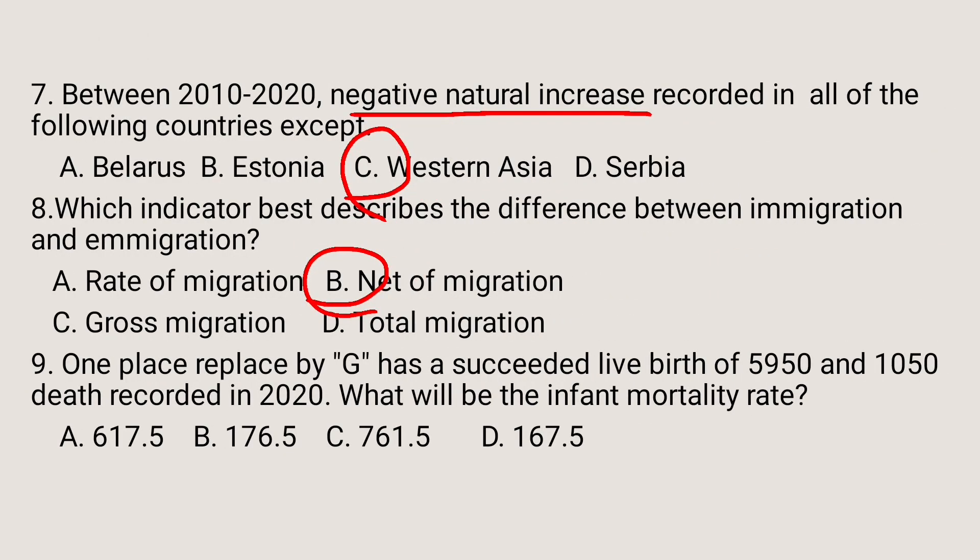Question number 9. One place replaced by G has a recorded live birth of 5,950 and 1,050 deaths recorded in 2020. What will be the infant mortality rate? Students can calculate this.